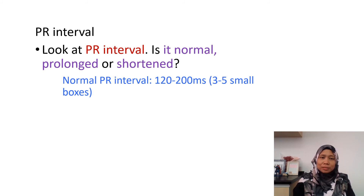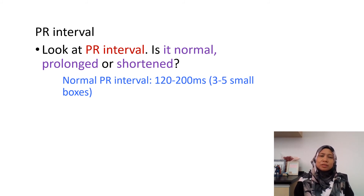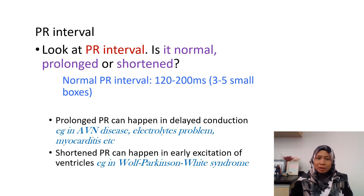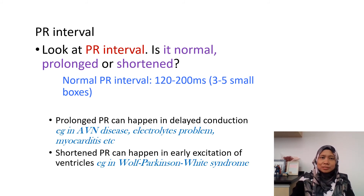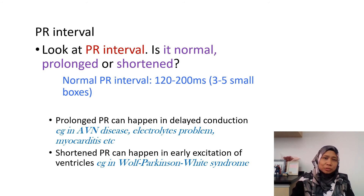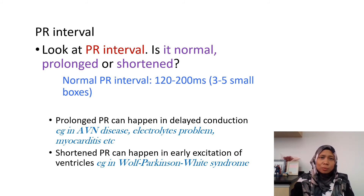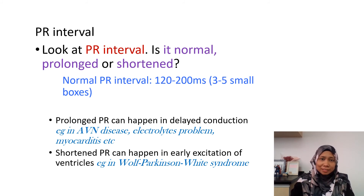Now we look at the PR interval — is it normal, prolonged, or shortened? A normal PR interval is about 3 to 5 small boxes. A prolonged PR can happen due to delayed conduction of the AV node, such as in AV nodal disease, electrolyte problems, or myocarditis. A shortened PR can occur in pre-excitation syndrome like Wolff-Parkinson-White.